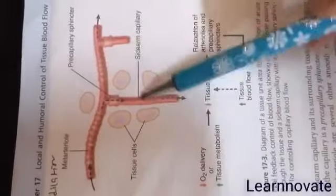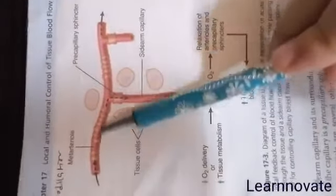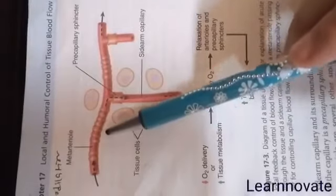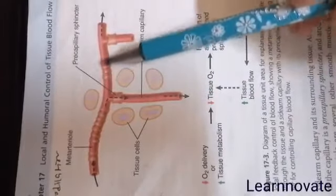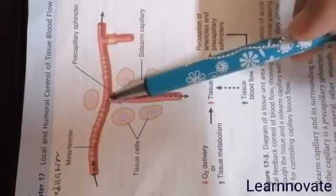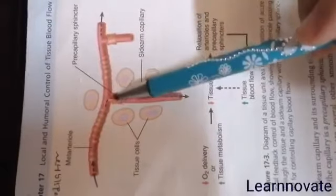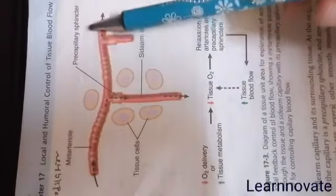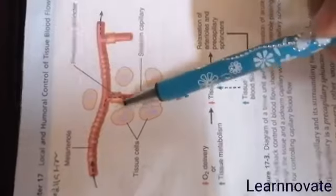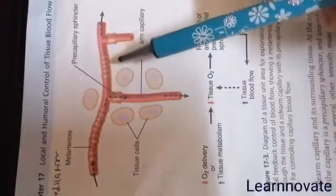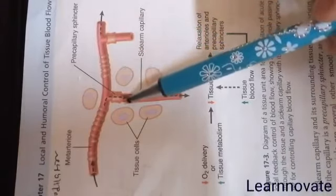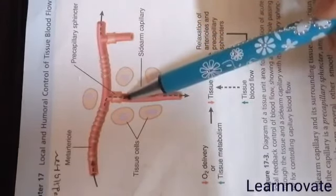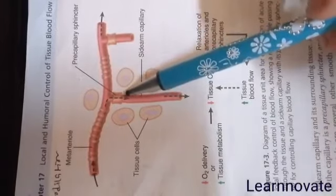Here you can see a picture of a vessel in which arteries are connected with metarterioles, and these metarterioles are connected by smooth muscle fibers. At the level of every metarteriole where there are sideway capillaries attached, there is a sphincter called a pre-capillary sphincter. This sphincter is either completely closed or completely open — it is never partially open or partially closed.